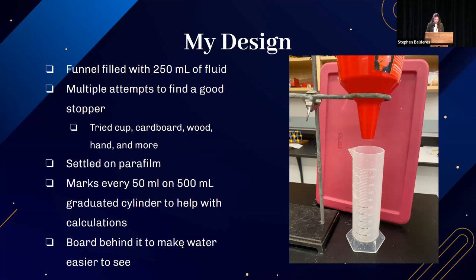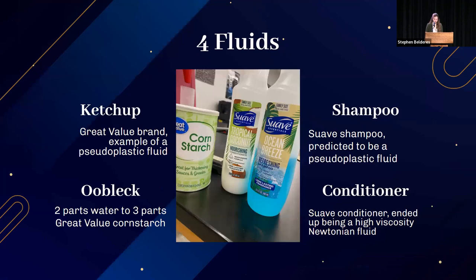It was a really frustrating process because while the parafilm worked, it was difficult to use — I had to run around the lab to clean the graduated cylinder whenever the parafilm lost its grip. I selected a few fluids to compare: water as a control, ketchup, oobleck, shampoo, and hair conditioner. Ketchup is a classic pseudoplastic fluid; oobleck is a good example of a dilatant fluid; shampoo and conditioner were my wild cards. I used water as the control since it's a Newtonian fluid. I used the least expensive brand of each product — Great Value ketchup and Suave shampoo and conditioner.